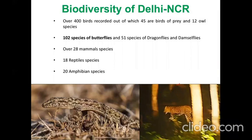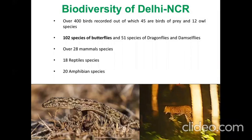Over 400 birds have been recorded in Delhi, making it the second most biodiverse capital in the world in terms of birds, after Nairobi. There's a rich culture of bird watching — more than 45 birds of prey and 12 owl species have been recorded. 102 species of butterflies are found here, and that's going to be our focus for today. Apart from that, 51 species of Odonata, 28 mammal species, 8 reptile species, and 20 amphibian species have also been recorded.